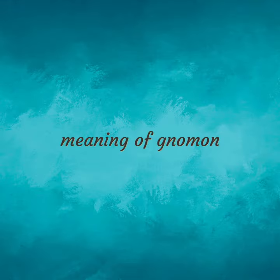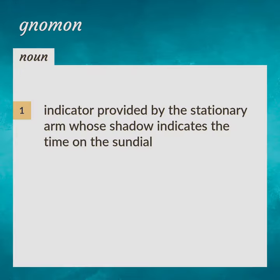Meaning of Gnomon: an indicator provided by the stationary arm, whose shadow indicates the time on the sundial.